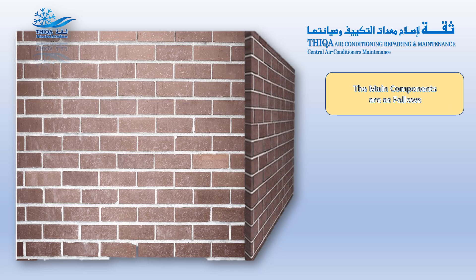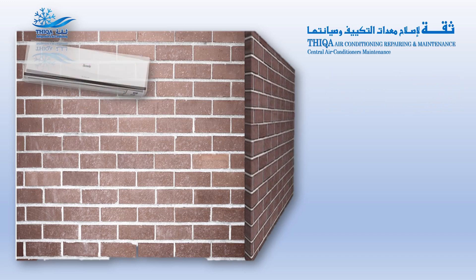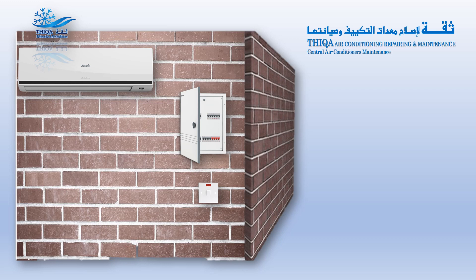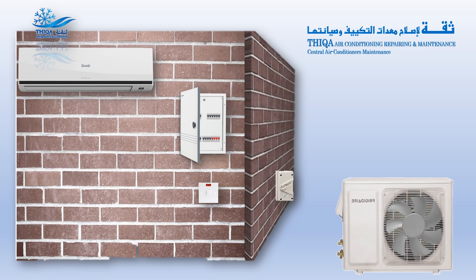The main components are as follows: indoor split unit, DB (the distribution board), split unit switch outlet, outdoor unit isolator, and outdoor AC split unit.